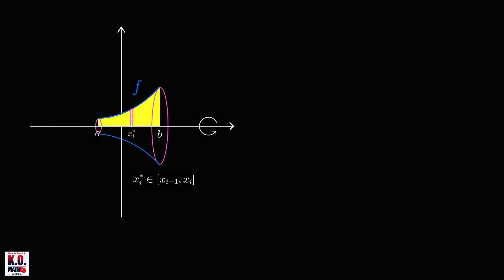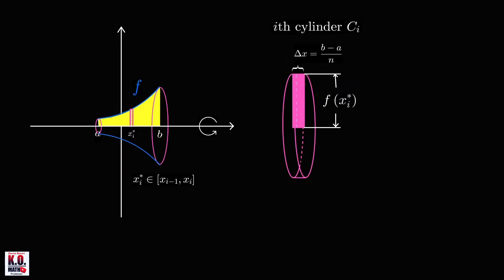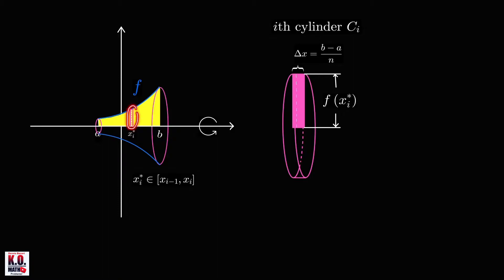Our right circular cylinder looks something like this. We divided the interval a, b into n equal subintervals, so the length of each subinterval is delta x, which equals b minus a all over n. That is the width of this ith rectangle.